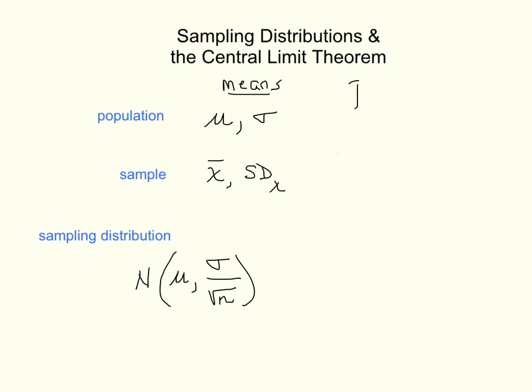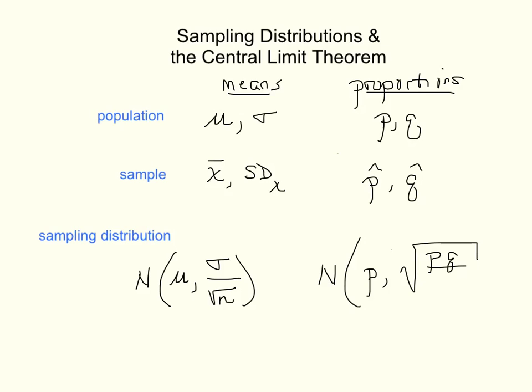And then for proportions, a population's proportion is typically labeled p or q, and then the sample is labeled p-hat or q-hat, and then we saw that those p-hats distribute themselves normally, and they'll be centered at p, and the standard deviation or the spread will be the square root of pq over n.